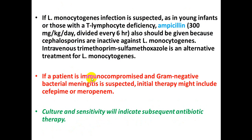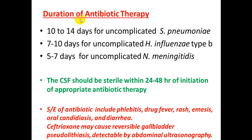In immunocompromised patients with suspected gram-negative bacterial meningitis, initial therapy may include cefepime or meropenem. Culture and sensitivity will guide subsequent antibiotic therapy. Duration is 10–14 days for Streptococcus pneumoniae, 7–10 days for Haemophilus influenzae type B, and 5–7 days for Neisseria meningitidis. CSF should be sterile within 1–2 days of initiating appropriate antibiotic therapy.